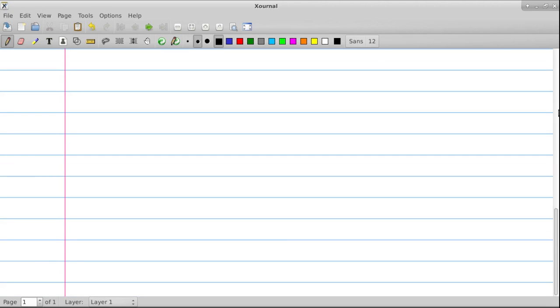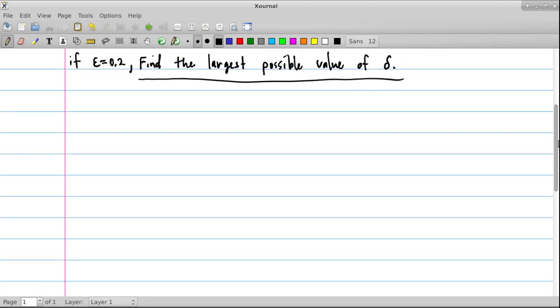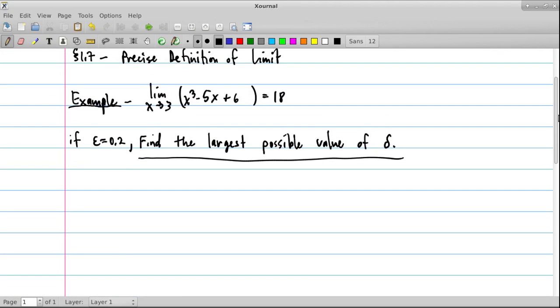And so remember that in the definition of a limit, the precise definition of a limit, we are told that we're allowed to let epsilon be some positive value. Then there exists a delta, which is a function of epsilon, bigger than 0.